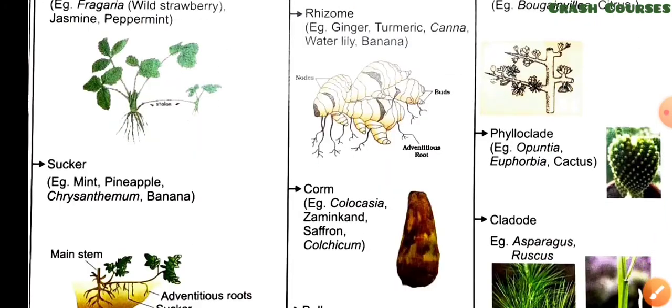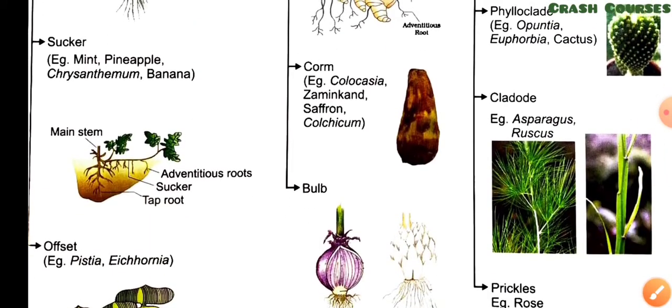Coming to the next type, that is sucker. In sucker type stems, the main stem grows in soil but branches develop from basal and underground nodes and come out from the soil. Examples of this type of stem are mint, pineapple, chrysanthemum, and banana.